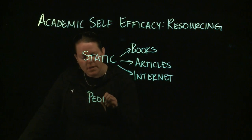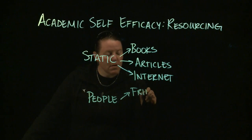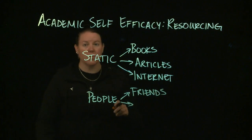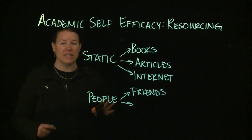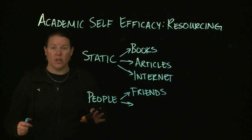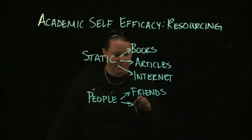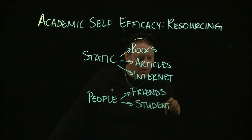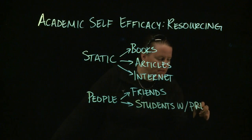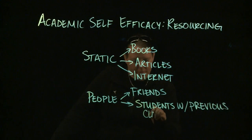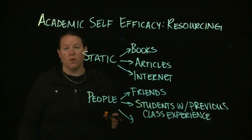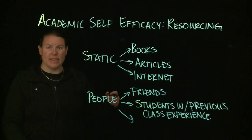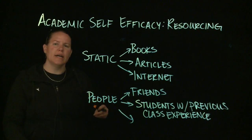Then you have people resources. You have your friends. If your friends don't include someone who has taken the class before, the idea is to make as many friends as you can in college, or try to resource yourself to people who have taken the class before with previous class experience — what we used to call upperclassmen. Getting to know juniors and seniors in their coursework increases the likelihood that you find someone who has taken that class before.